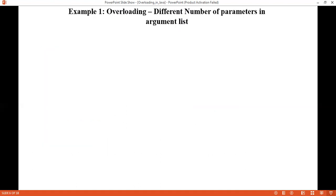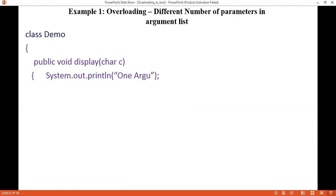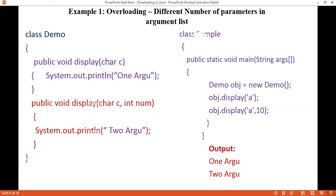Now we'll see examples for each type. First, by changing the number of parameters: one method takes one parameter and another method with the same name takes two parameters. When calling with only one character parameter, the first method is called. When passing one character and one integer parameter, the second method is called.